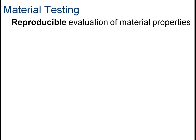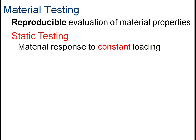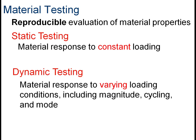When we talk about material testing, what we're really talking about is how we can evaluate material properties. In this module we're going to talk almost exclusively about tensile testing. We produce a reproducible evaluation of material properties, meaning the results can be replicated and scaled to fit whatever size the material is ultimately used in. We can break this down into static testing — how the material responds to a consistent and constant loading — and dynamic testing, which is a varying loading. In dynamic testing we vary the cycles and look at how it fatigues over time.